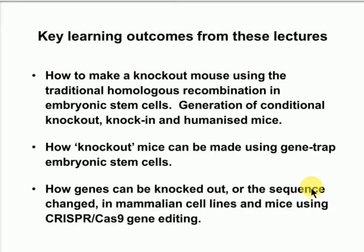I don't think I have learning outcomes in any other lecture I give, but anyway. What you should hopefully learn from these lectures is how to make a knockout mouse using the classical homologous recombination method from embryonic stem cells, and then how you could go on to make conditional knockout mice, where the knockout will be just in certain cell types. How you could make knock-ins, where you knock in mutations into the genome, and how you could make humanized mice — replacing a mouse gene with the human version. Another cheaper way of making a knockout mouse is using gene trap embryonic stem cells, and finally, CRISPR-Cas9 gene editing — how you can change genes at the genome level in cell lines and in mice.